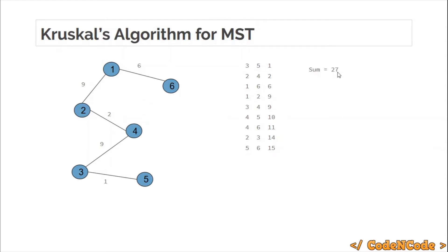This is how we calculate the total sum of weights of all edges in the MST using Kruskal's algorithm. As you can see, this is a very easy algorithm to implement. In the next lecture, I'll take an example problem and implement this using DSU — the Disjoint Set Union data structure. If you're not familiar with DSU, I have already made a playlist for it, so check that out before the next video. If you already know how DSU works, you're good to go. Till the next video, just keep coding. Thank you.